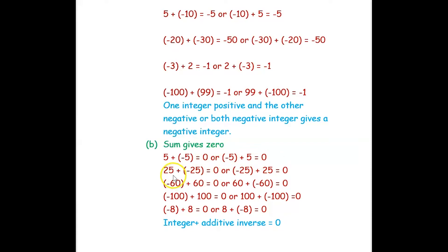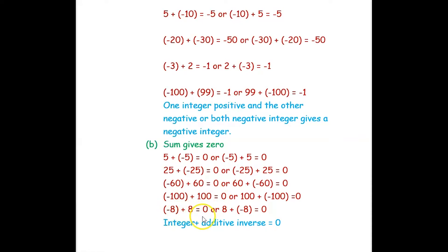Similarly, 25 plus negative 25 equals 0, or negative 25 plus 25 equals 0. Negative 60 plus 60 equals 0, negative 100 plus 100 equals 0, and negative 8 plus 8 equals 0.